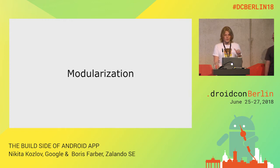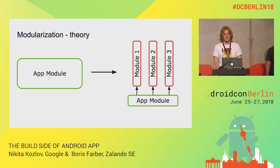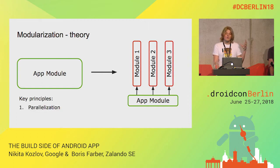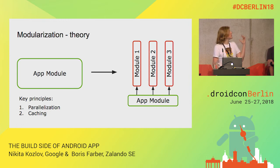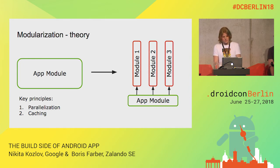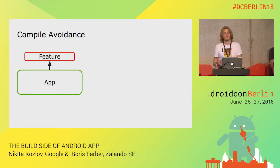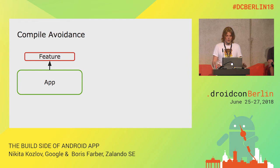Now let's go to the hard stuff: modularization. Modularization is the process of taking a big one-module app and splitting it into multiple modules. There are three reasons why it helps. First, parallelization — independent modules can be built by Gradle in parallel, so the build is faster. Second, caching — for the right configuration, if you change one module, you don't need to recompile the others. Third, compile avoidance — if you change the body of a method in a feature module without changing its public interface, Gradle knows it doesn't need to recompile the whole app, so you only need to compile the feature module.